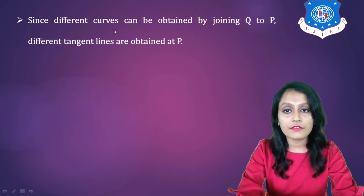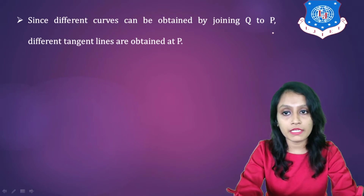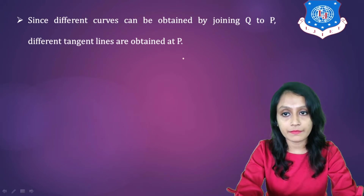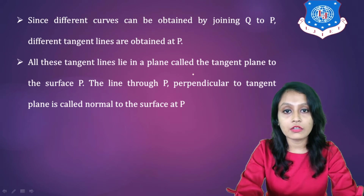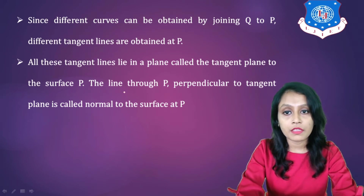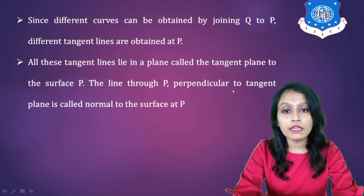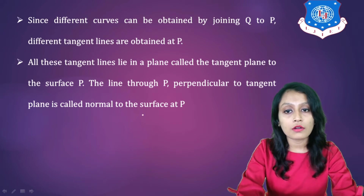Since different curves can be obtained by joining Q to P, different tangent lines are obtained at P. All these tangent lines lie in a plane called the tangent plane to the surface at P. The line through P perpendicular to the tangent plane is called the normal to the surface at P.